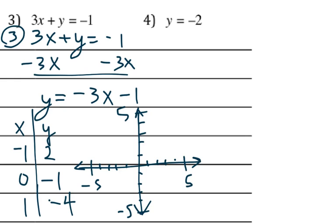And then when I go to plug this stuff in I got negative one two, zero negative one, and then one negative four. And there's my graph going through those points, which I can then label as the original form it was given in: three x plus y equals negative one.